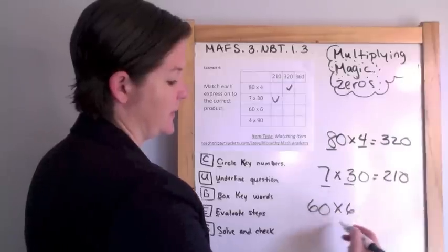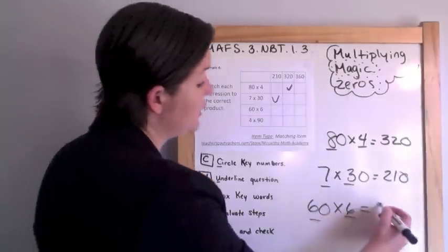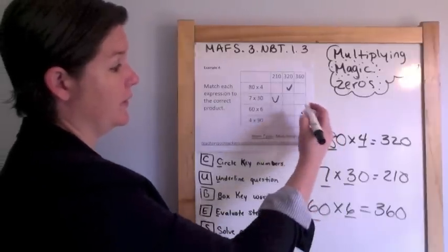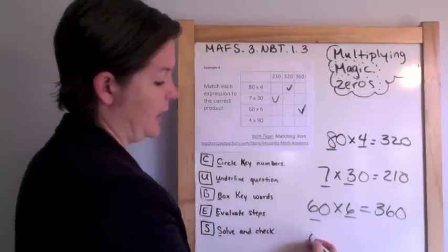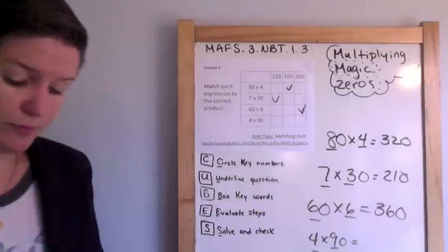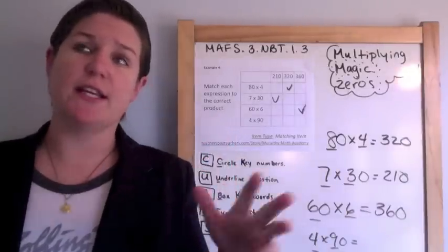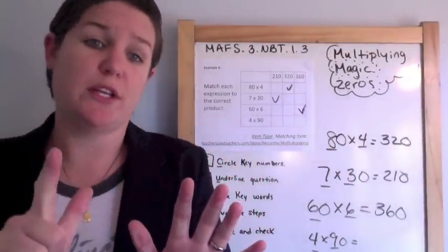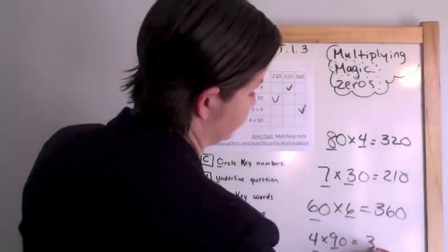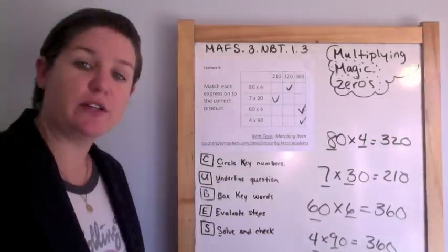60 times six: 6, 12, 18, 24, 30, 36 — add the zero — 360. And four times 90: 4, 8, 12, 16, 20, 24, 28, 32, 36 — another 36! Add that zero — 360. So two expressions land in the 360 column.